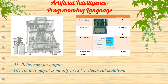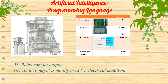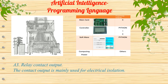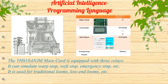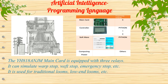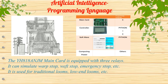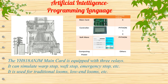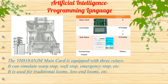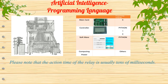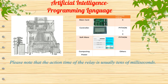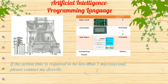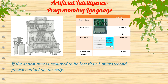3. Relay contact output. The contact output is mainly used for electrical isolation. The YH-818-ANJM main card is equipped with 3 relays. It can simulate warp stop, weft stop, emergency stop, etc., and is used for traditional looms and low-end looms. Please note that the action time of the relay is usually tens of milliseconds. If action time less than 1 microsecond is required, please contact us directly.